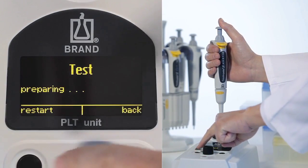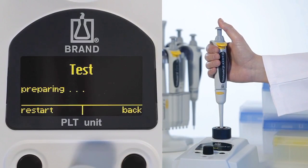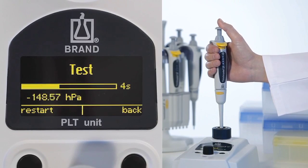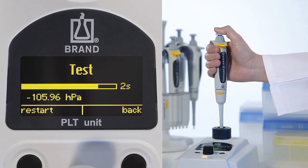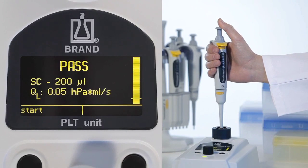We now check this pipette without the tip because the leak could be in the coupling area between the pipette shaft and the tip. The pipette is leak-tight. The tip is defective.